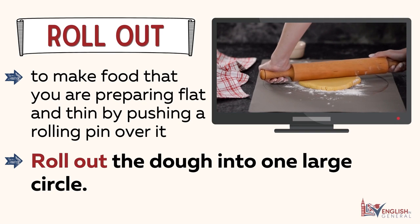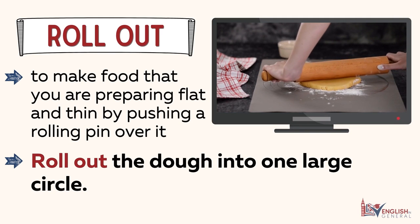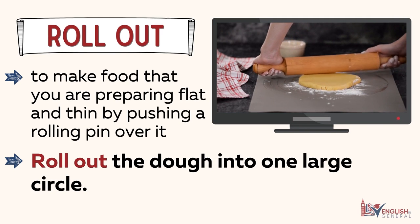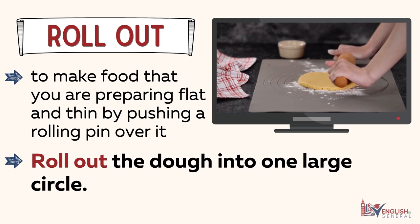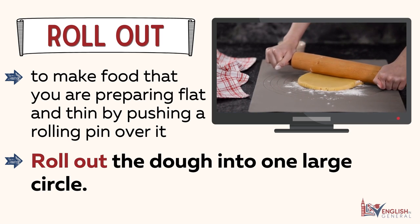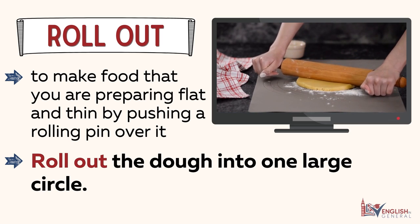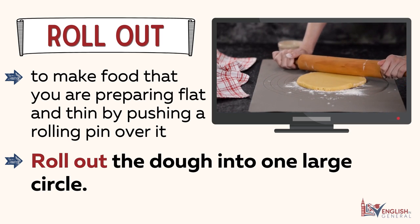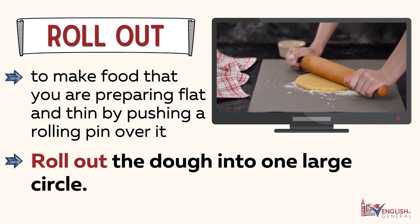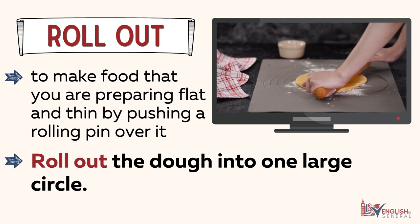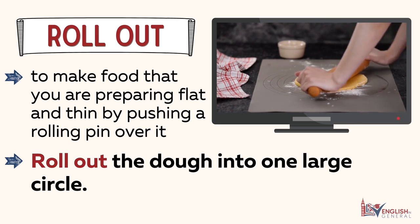Roll out. Definition: to make food that you are preparing flat and thin by pushing a rolling pin over it. Roll out the dough into one large circle.